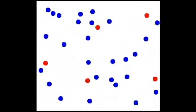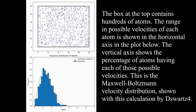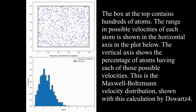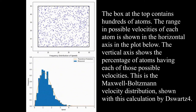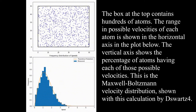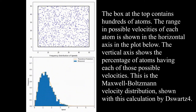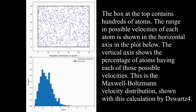Some atoms are painted red so you can see how their speed changes in time. The box at the top contains hundreds of atoms. The range in possible velocities of each atom is shown on the horizontal axis in the plot below. The vertical axis shows the percentage of atoms having each of those possible velocities. This is the Maxwell-Boltzmann velocity distribution.